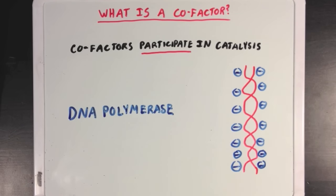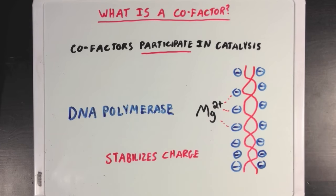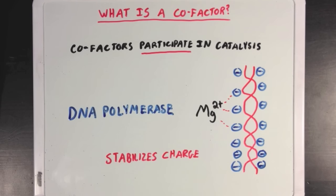Now you may remember that DNA is a very negatively charged molecule because of all the negatively charged phosphate groups that you'll find around it. Well, DNA polymerase uses a magnesium ion as a cofactor, which can use its big positive charge to stabilize all that negative charge on DNA. And you can see how this is different from a coenzyme, because instead of acting as a carrier molecule, the magnesium ion cofactor is stabilizing the DNA, and is more directly involved in the actual catalysis.